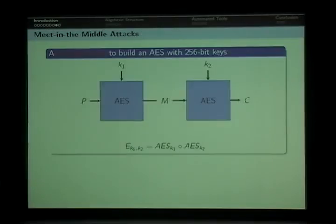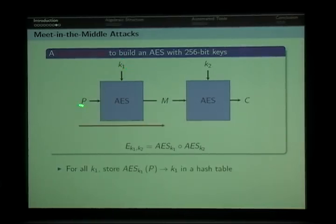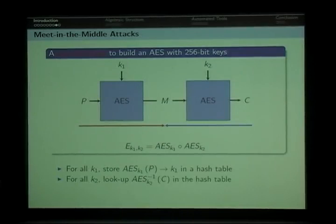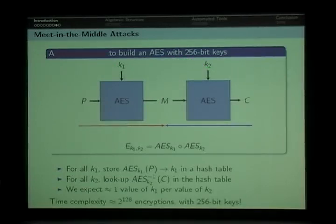So I will just quickly remind how meet-in-the-middle attack works. This is a very bad way to build an AES with 256-bit keys out of two versions of a smaller one—just the composition of the AES with two different keys. This can be attacked faster than exhaustive search by first enumerating all the possible values of k1, encrypting the plaintext under this key and obtaining the internal state m. Then we can store m and k1 in a hash table. Then we can enumerate all the possible values of k2, decrypt the ciphertext, and we should obtain the same value in the middle. So by looking at the hash table, we can associate to each value of k2 a value of k1. With something like 2^128 encryptions, we can recover the full key. And that uses only two plaintext pairs, so it is as low as it gets.